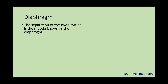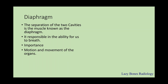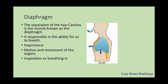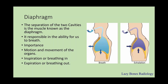Before we get to the second main cavity, there's a barrier that divides the two. The separation of the two cavities is the muscle known as the diaphragm. This muscle is very important because it is responsible for our ability to breathe. As technologists, the diaphragm is important because it allows us to know if the anatomy of interest is within the picture. When you breathe in and out, the diaphragm moves, shifting the organs in different directions. When you inspirate or breathe in, the diaphragm bellows down, pushing against the abdomen, while when you expirate or breathe out, the diaphragm relaxes, compressing the lungs.